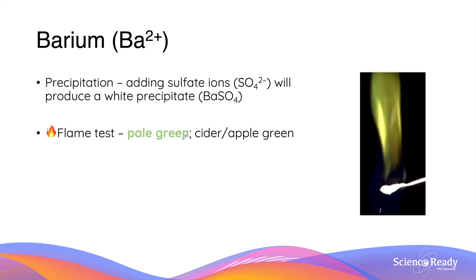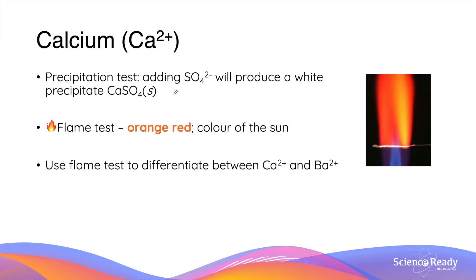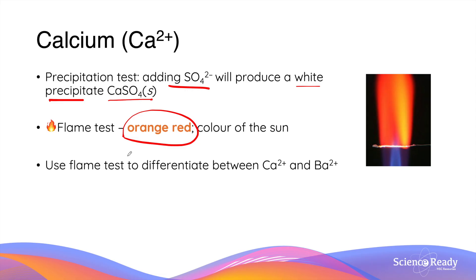Barium ion can be identified through two main ways. By adding sulfate ions to produce barium sulfate — usually a white precipitate — or using the flame test, as barium ions in the presence of a flame produce a pale green color. Similarly, calcium ions can be identified by adding sulfate ions to produce white calcium sulfate, or using the flame test which produces an orange-red or brick red color. If you need to distinguish between barium and calcium ions, it is more effective to use the flame test as the two metals produce different colors.